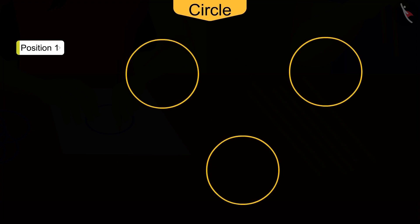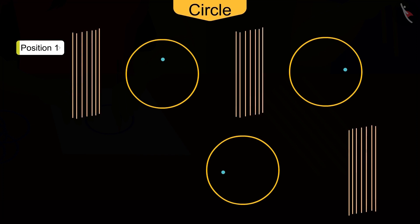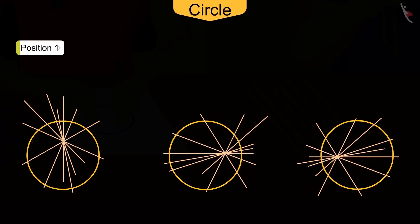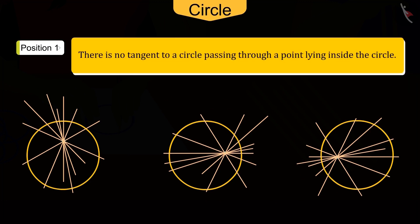Absolutely perfect. Now can you try to draw a tangent by taking some other point inside the circle? We can see that tangents cannot be drawn on a circle from any point inside the circle.